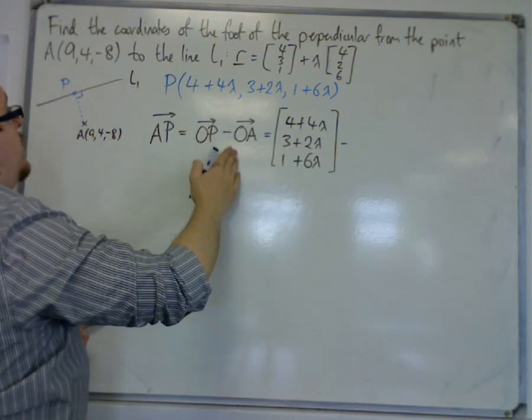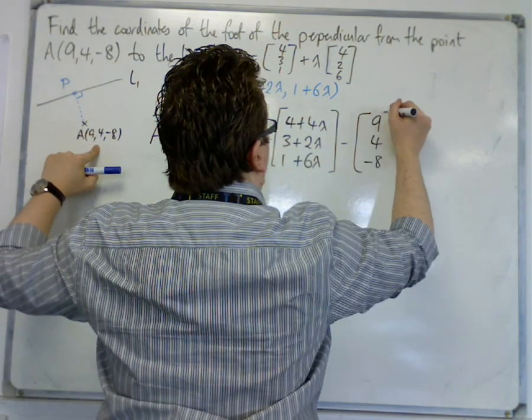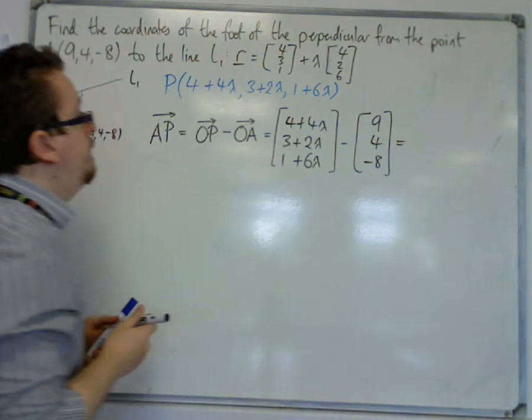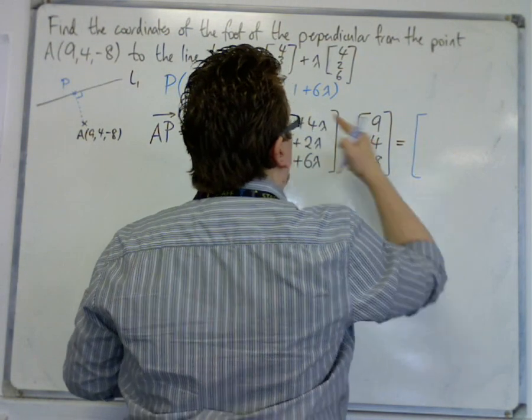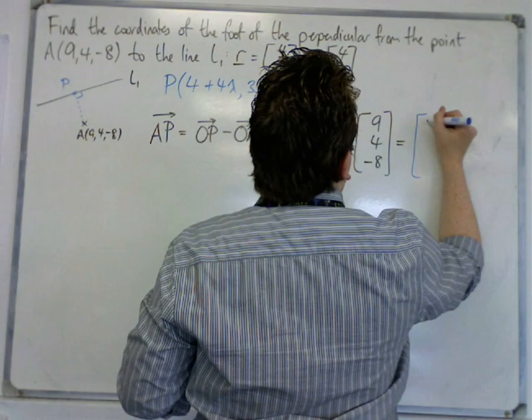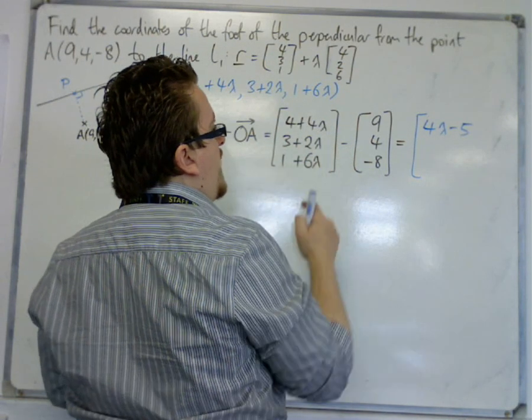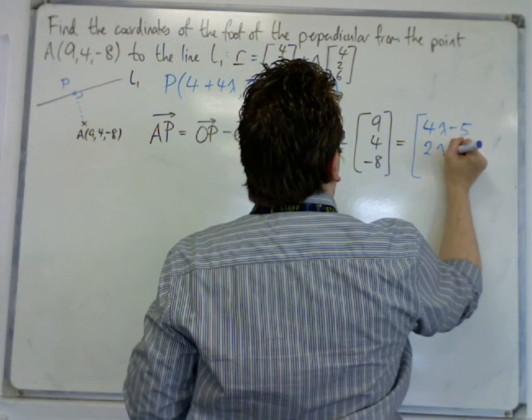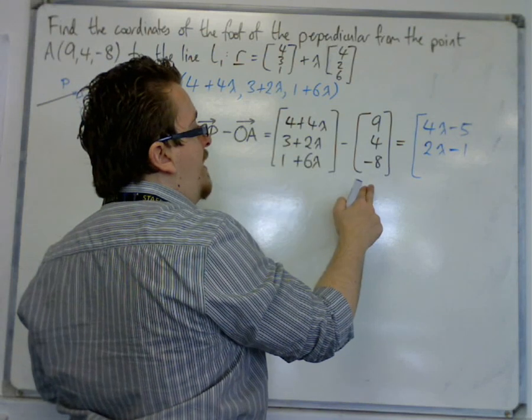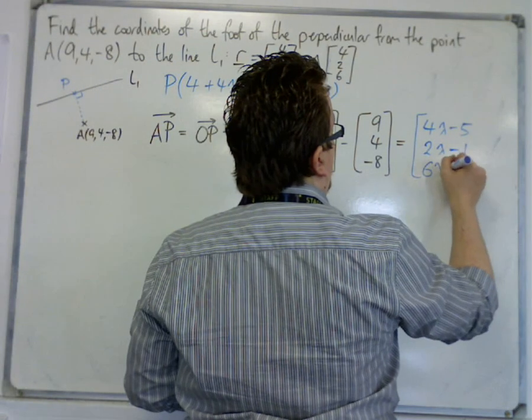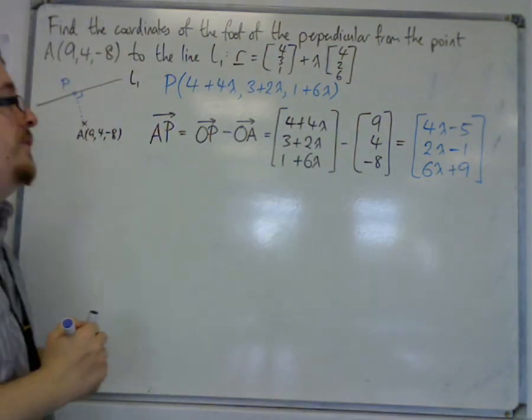Now the position vector for the coordinates of A is 9, 4, minus 8. So I'm going to do a subtraction of these two vectors. So I've got 4 plus 4 lambda take away 9 is 4 lambda minus 5. I've got 3 plus 2 lambda take away 4 is 2 lambda take away 1. And 1 plus 6 lambda take away minus 8, which is 6 lambda plus 9. So this is the vector AP.